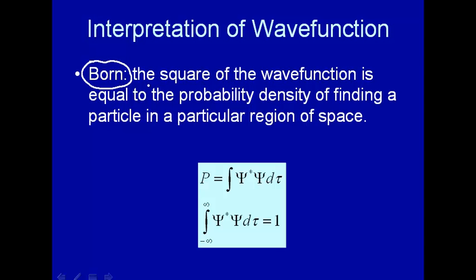So no longer are these particles well-defined. For example, in the Bohr model of the atom, you had these well-defined particles orbiting around the nucleus and they had a quantized angular momentum. Now, the particle represented by a wave function is no longer definite, but in fact, it's just the probability density of finding a particle in a particular region of space.